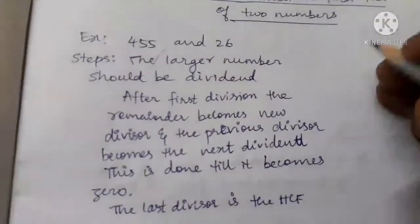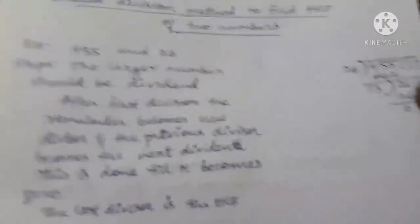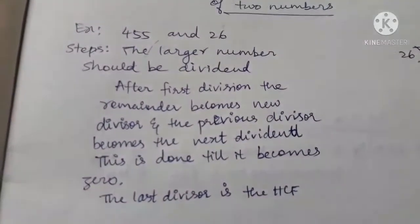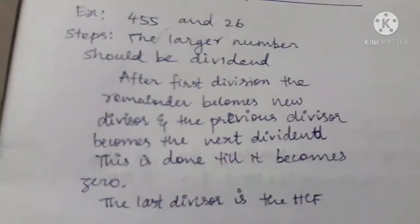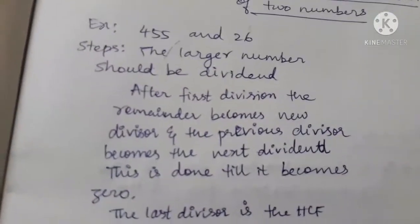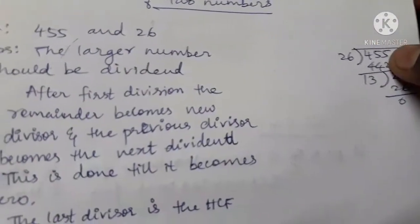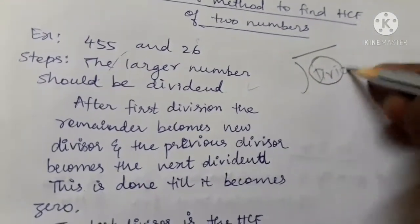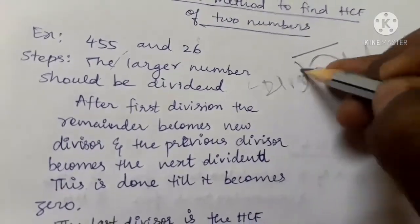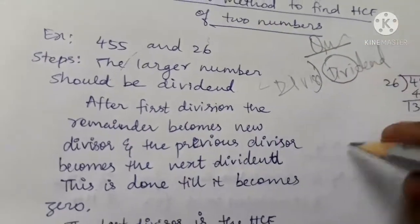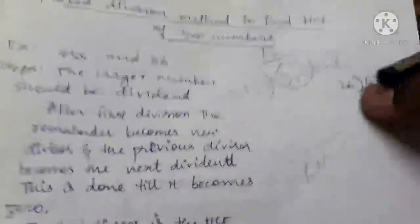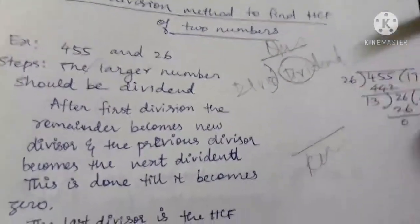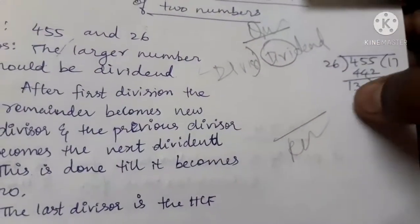If two numbers are given, what you should do: first of all, you should see the two numbers — 455 and 26. You should select the bigger number. 455 is a bigger number than 26, so just put it in the place of dividend. The smaller one goes in the divisor. Dividend is this place; this is divisor; this is quotient; and the last one you will get is remainder. Now you start dividing: 26 times 17 is 442, you get remainder as 13.